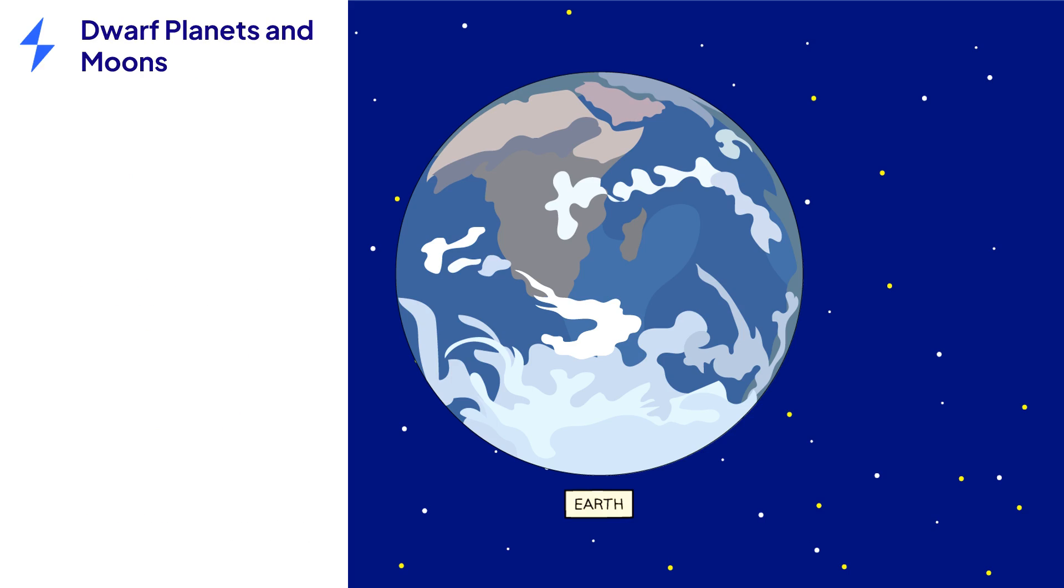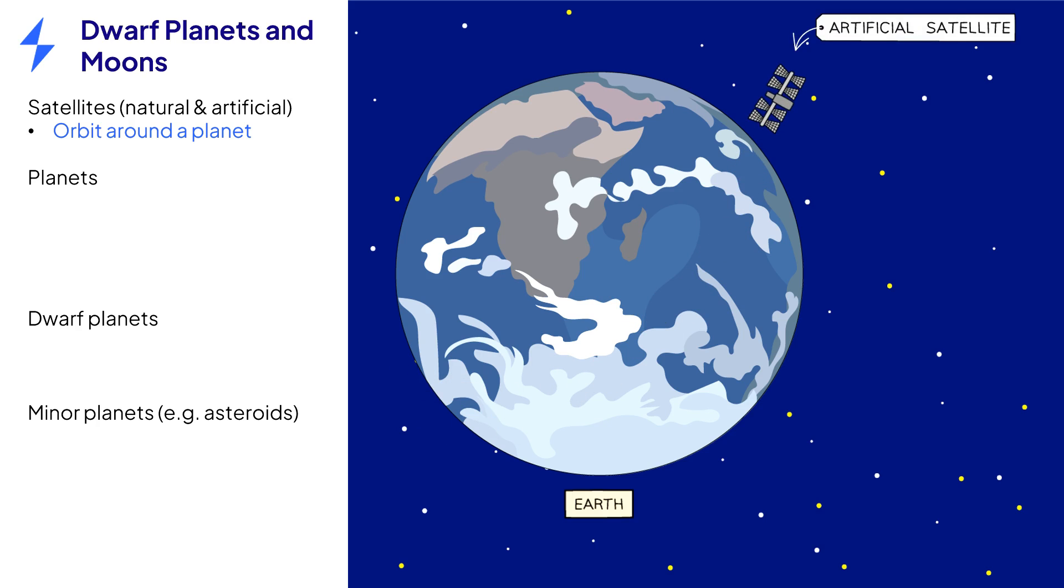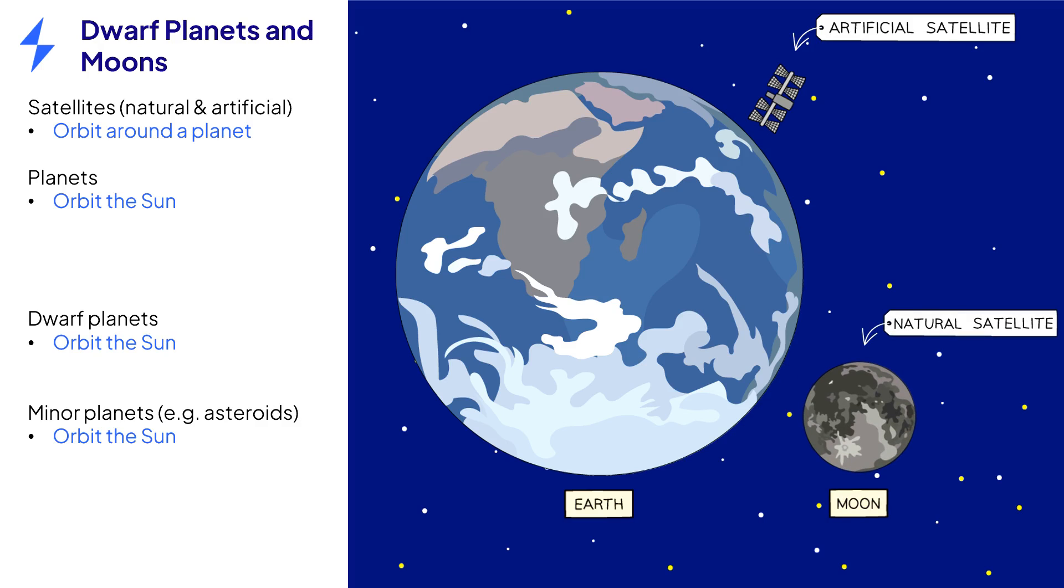Astronomers have specific definitions for satellites, planets, dwarf planets and minor planets. A satellite is any object that orbits around a planet. Artificial satellites are man-made. Natural satellites, such as the Moon, are not man-made. All types of planets orbit the sun.